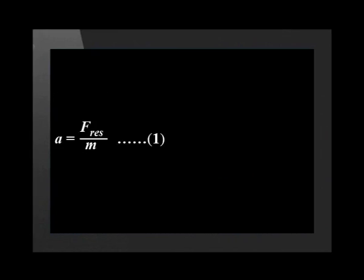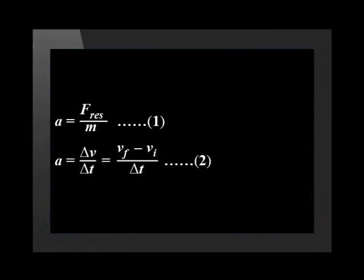We can now use this equation to define Newton's second law of motion in terms of momentum. We start with acceleration, which is defined as the rate of change of velocity, where v_i is the initial velocity and v_f is final velocity, and Δt is the change in time. So now we have two equations describing acceleration.